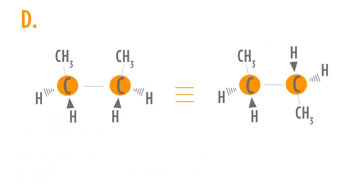In the last case, again notice that all of our connections are the same, so this is not going to be a constitutional isomer. It looks like a cis-trans, but notice that we have a single bond. Because we have a single bond, we can rotate around that single bond and convert the first conformation into the second. There is some energy involved in converting from one conformation to the other, but since we can convert, these are conformations.